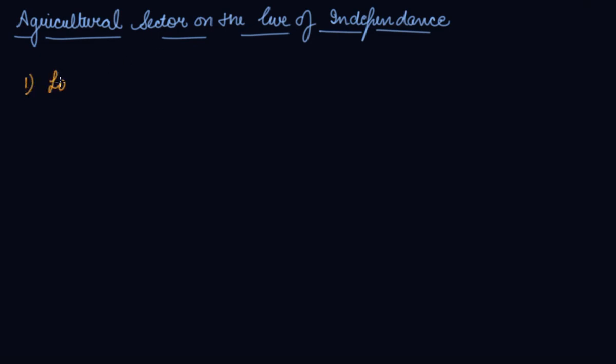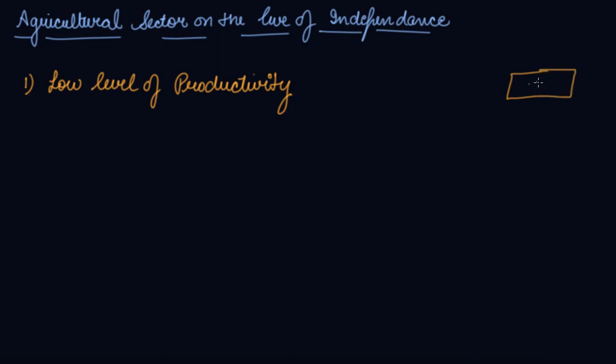Number one was the low level of productivity. According to the land the farmers had, the productivity was very less. If we have land of one hectare, we can produce a huge ton of wheat now. But at that point of time, despite having a huge area of land, there was a low level of productivity. The output was extremely low, and agriculture could easily be characterized as backward. Low productivity implied a low level of output despite large area under cultivation.